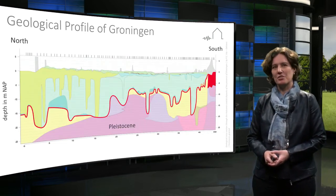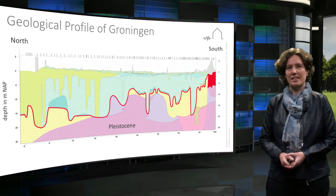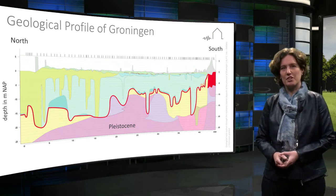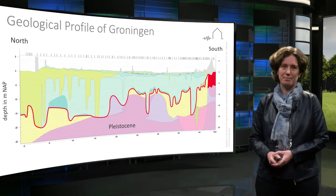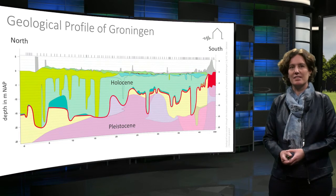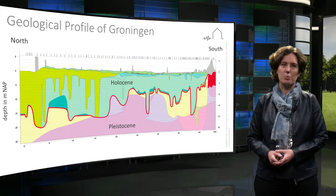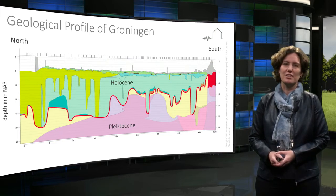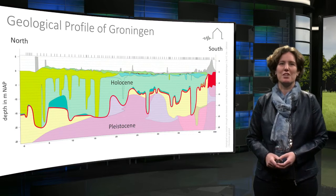We know this from thousands of boreholes and cone penetration tests in the area. Typical for Groningen are the channels that were formed by the sea. It can also be seen that the south of the area has a different geology to the north. In the south the Pleistocene soil reaches to the surface, while in the north the younger Holocene soils can be up to 25 meters deep.